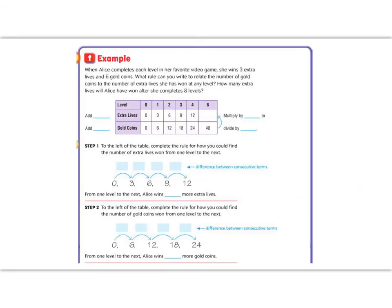All right, in the example we're creating another data table. Remember that it's not just continuing the pattern, but finding a relationship between these numbers. It says, when Alice completes each level of her favorite video games, she wins three extra lives and six gold coins. What rule can you write to relate the number of gold coins to the number of extra lives she has at the end of a level? How many extra lives will she have at the end of eight levels?